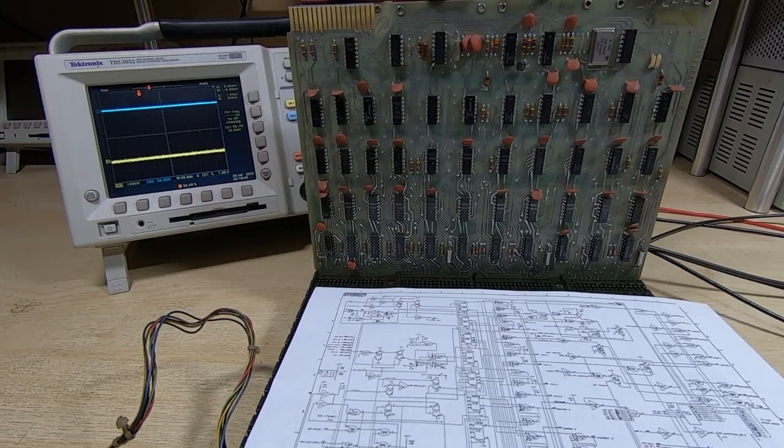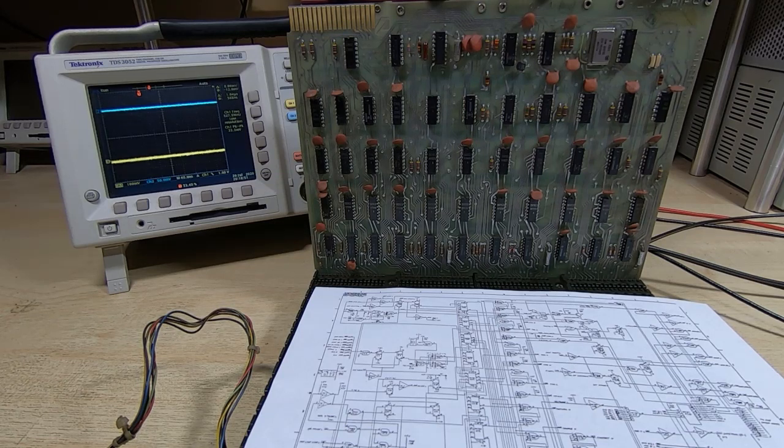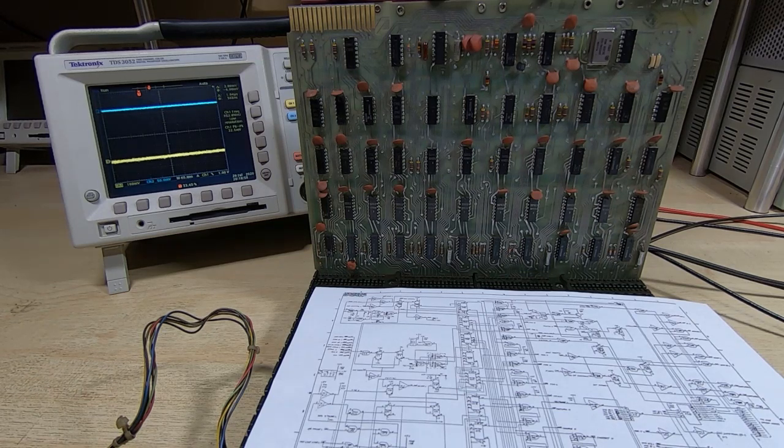And we're drawing 1.9 amps at 5 volts, which is about typical. It's what we should be drawing. But even so, what I'm going to do now is just give it a few minutes and then we'll check with a thermal camera to make sure nothing is getting too hot.